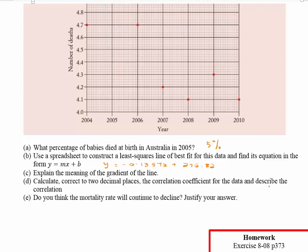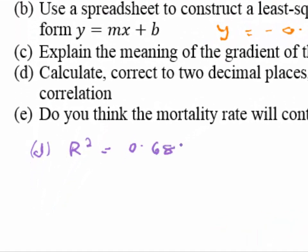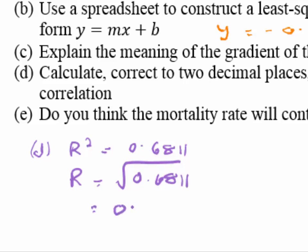Part D says calculate, correct to two decimal places, the correlation coefficient for the data and describe the correlation. From Excel, our R-squared value is 0.6811. To find just the correlation coefficient R, we take the square root, which gives 0.825287..., approximately equal to 0.83.